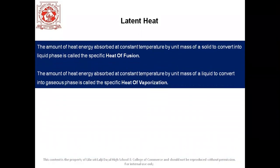The first topic is latent heat. In the previous standard, we've already learned about heat and its different types of heat transfer. Heat is a form of energy. When there is a change of state of a substance — that is, from solid to liquid, liquid to gas, or solid to gas — heat energy is absorbed or removed from the substance at constant temperature. This heat energy is called latent heat. Latent heat per unit mass of the substance is called specific latent heat.